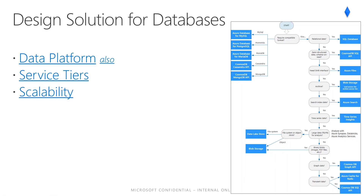Azure SQL Database is based on SQL Server database engine architecture adjusted for the cloud environment in order to ensure 99.99% availability even in the case of infrastructure failures. There are three architectural models used in Azure SQL Database: one, General Purpose/Standard; two, Hyperscale; and three, Business Critical/Premium. The Hyperscale service tier is the newest service tier in the vCore-based purchasing model — a highly scalable storage and compute performance tier that leverages Azure architecture to scale out storage and compute resources substantially beyond the limits available for the General Purpose and Business Critical service tiers.